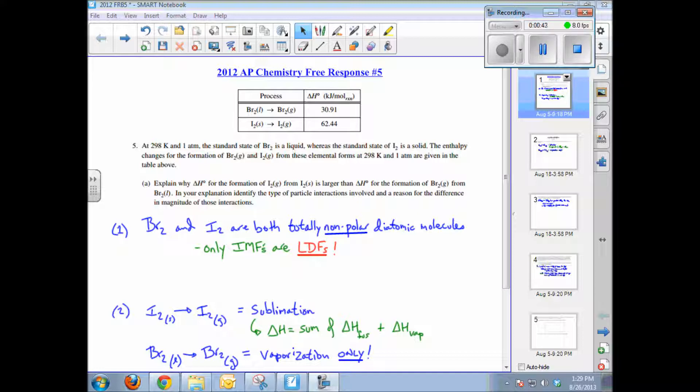Now, this is important. In your explanation, identify the type of particle interactions. They want to know what type of attractive forces are present and a reason for the difference in magnitude of those interactions.